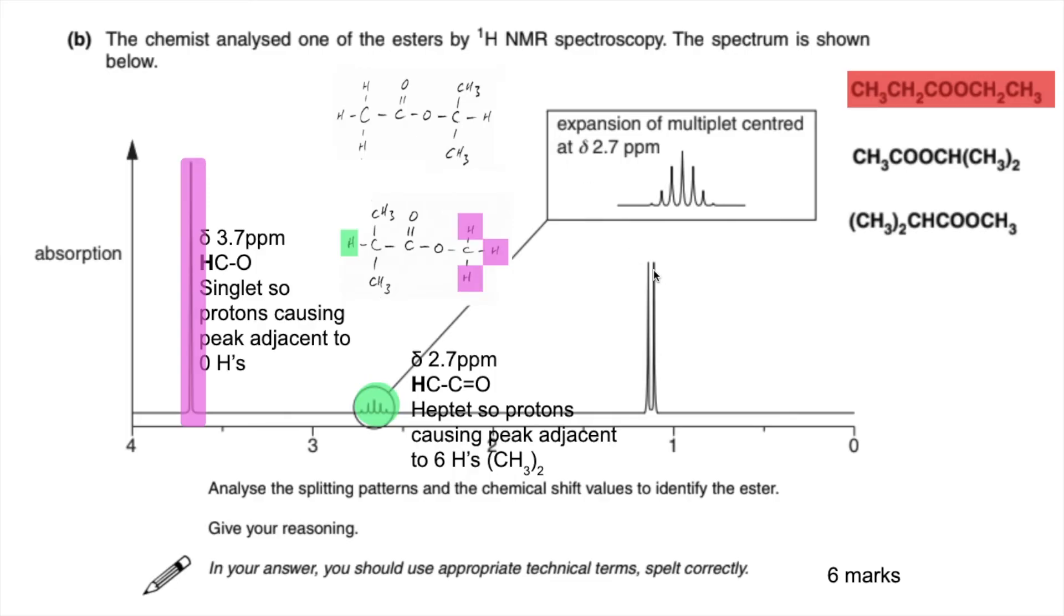So we'd better just say something about this doublet here. So it's at delta 1.3 ish. And it's an HCR environment. It's a doublet. Therefore, the protons causing the peak have got one adjacent proton. So again, it's going to be these molecules, these hydrogens here. This is HCR environment. And yes, it's adjacent to that green proton there. So we're going to get the doublet. This would also give a doublet in the same region because these protons here are still in HCR environment, and they're still adjacent to that single proton there. So they'd both give a doublet. But basically, that ester there, these peaks...